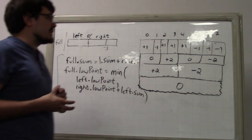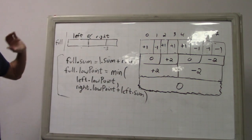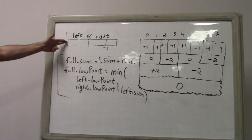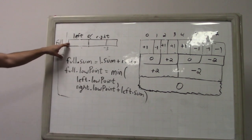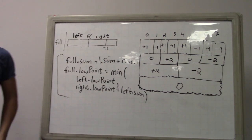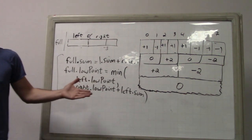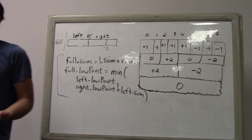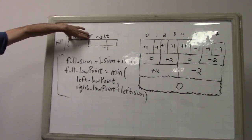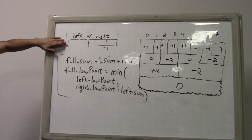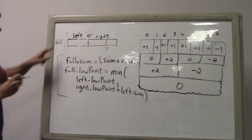The conditions for the parentheses being well matched: full.sum should be zero, and full.low_point should be zero — or greater than or equal to zero, but it can never actually be positive because you start at zero. At the very top level, full.low_point has to be zero or a negative number. So overall this is the solution via divide and conquer.